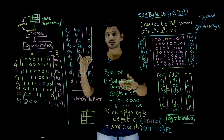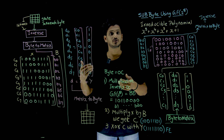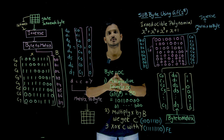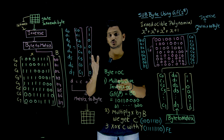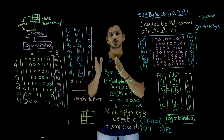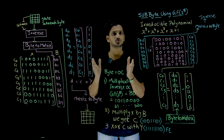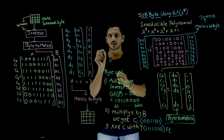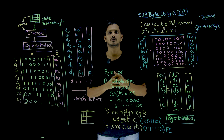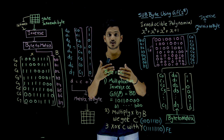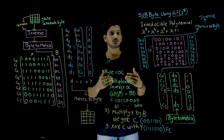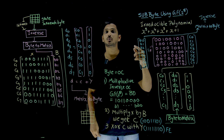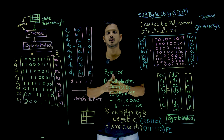In our last class, we clearly discussed the first way using the table. We provide some table, and based on the table we are going to do substitution — take each byte and do the substitution. Similarly, this is the second way using GF of 2 power 8 polynomial.